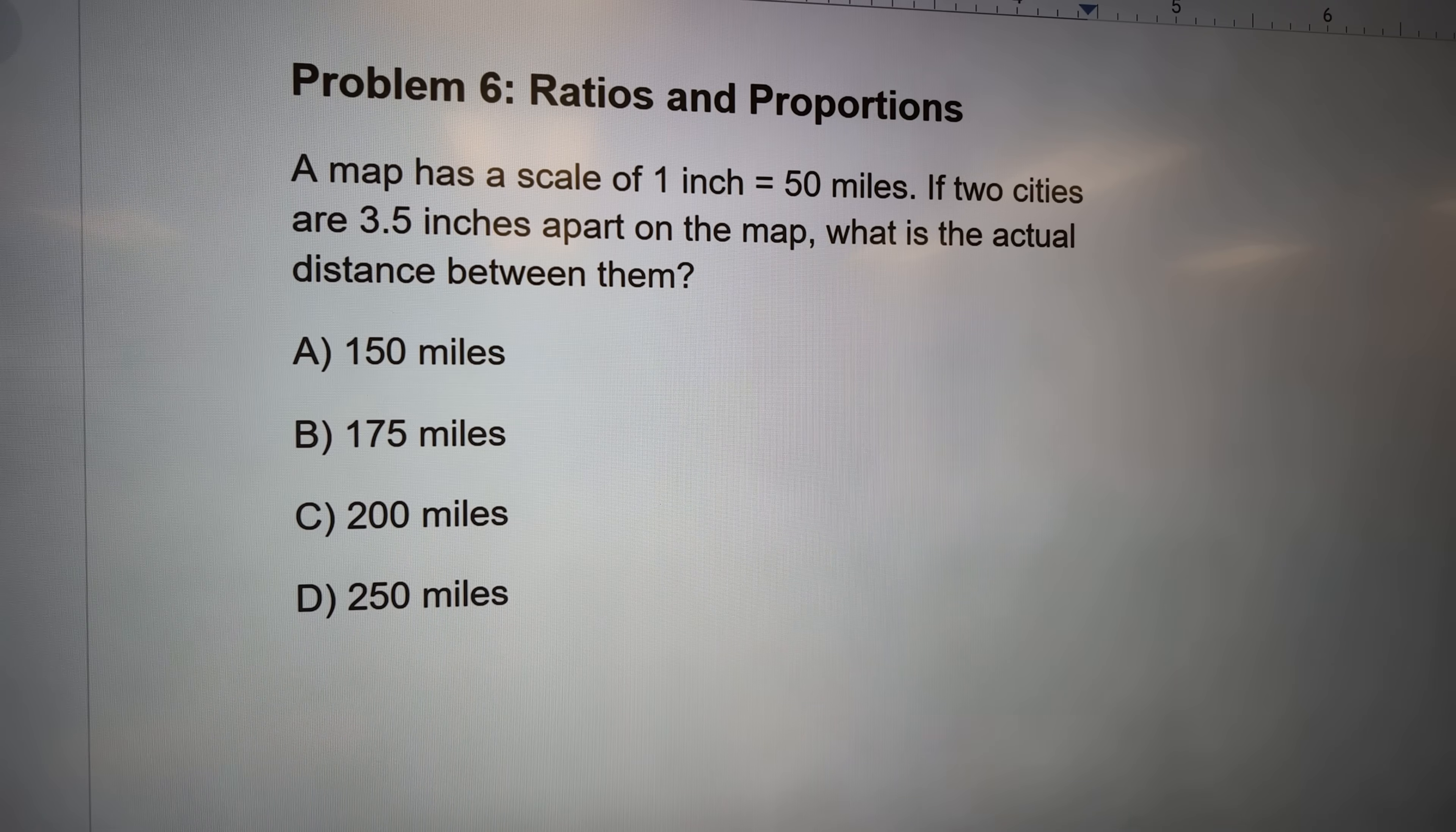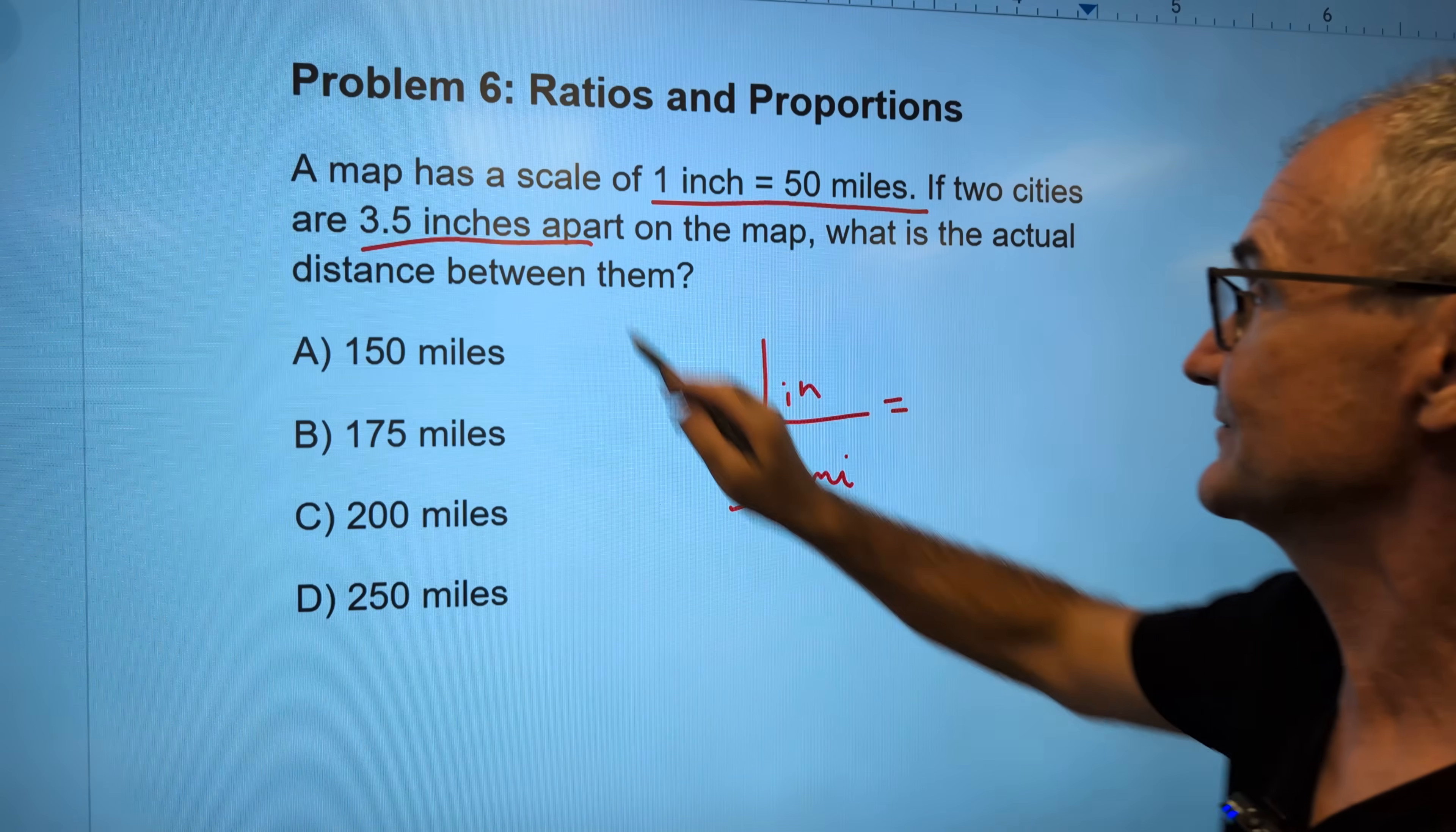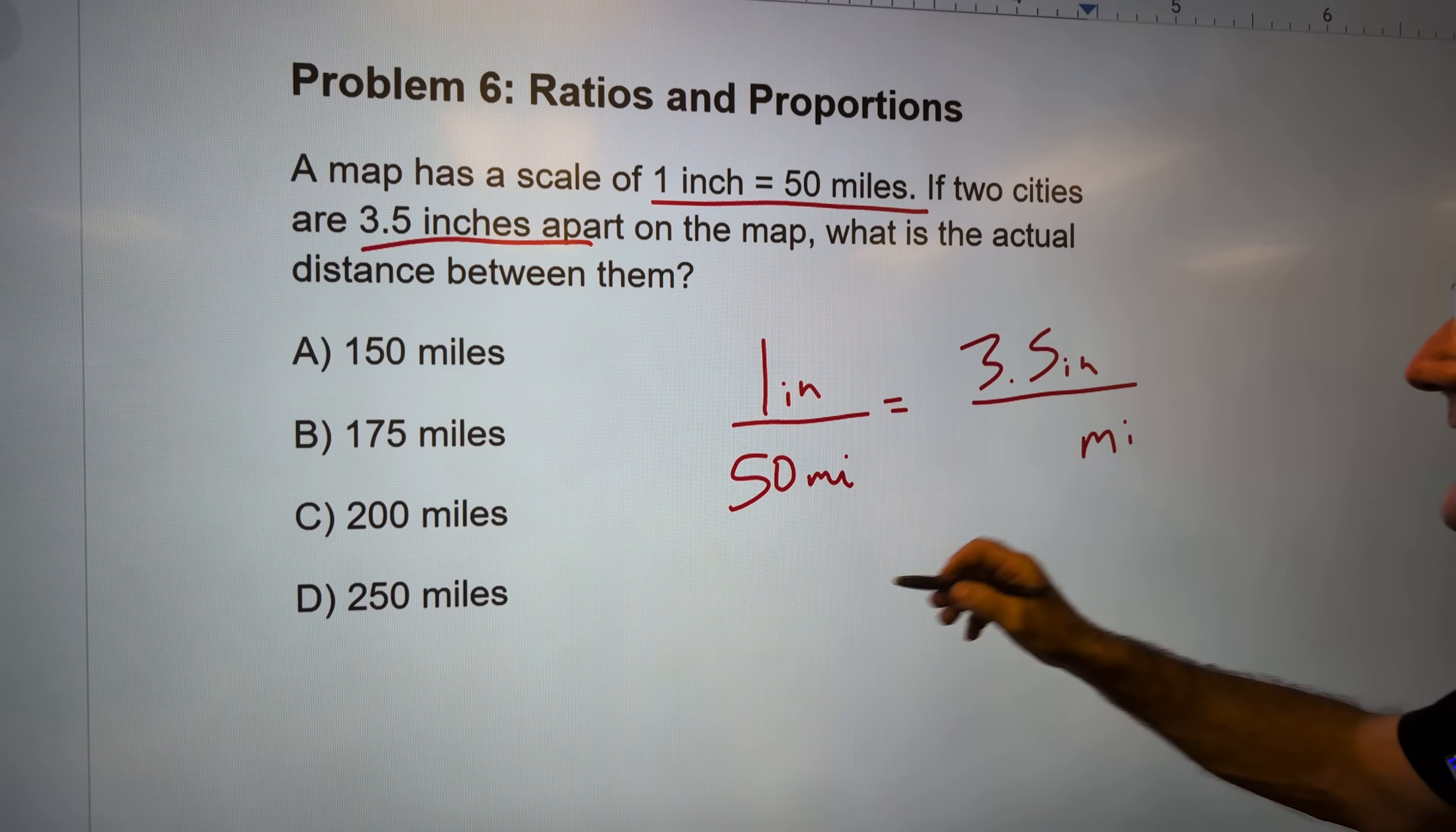A map has a scale of 1 inch equals 50 miles. So I have 1 inch is equal to 50 miles. And if two cities are 3.5 inches apart, so I'm going to set up this proportion, right? 3.5 inches apart, what is the actual distance? How many miles is that? Well, how do I get from 1 inch to 3.5? I multiply by 3.5, so I have to multiply here by 3.5 as well.